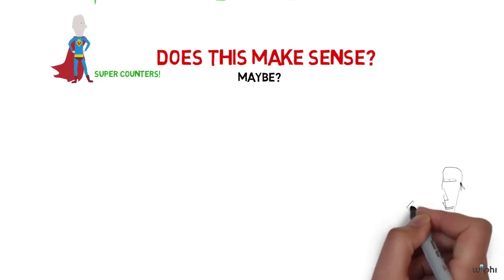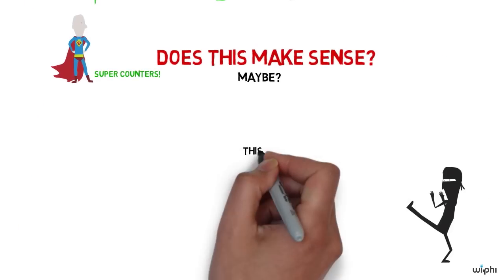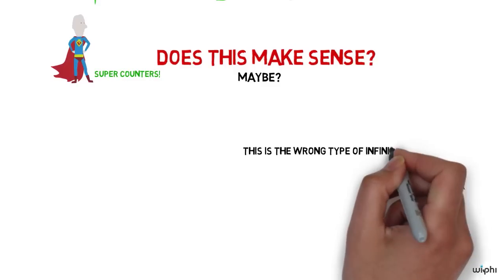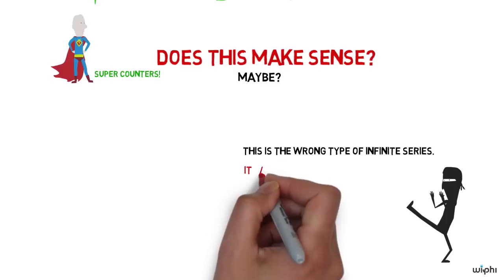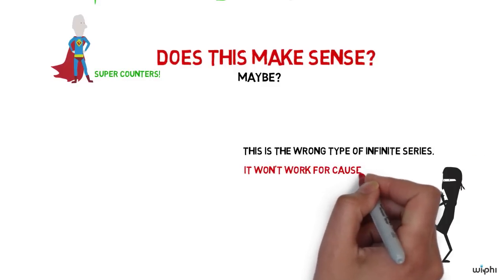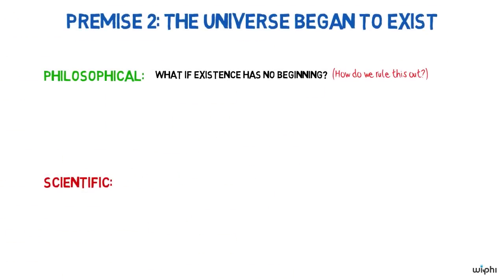Now some philosophers have argued that this is the wrong sort of infinite series. Something to think about is whether causes could work in this super counting way. But we will set this aside because there is another way to defend the second premise of this version of the cosmological argument.